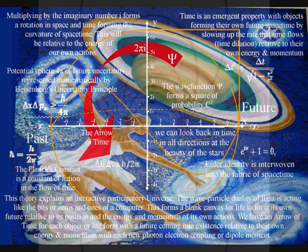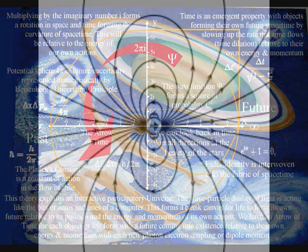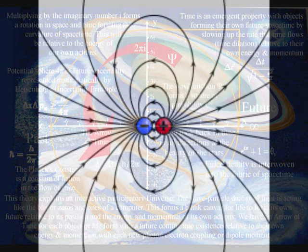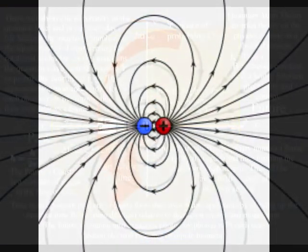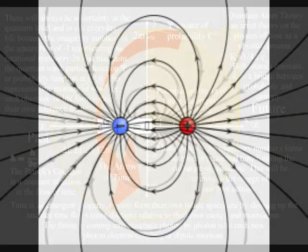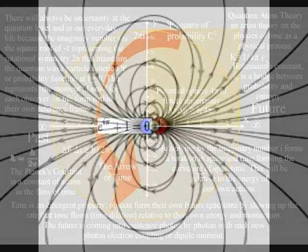Light photon by light photon with each new photon electron coupling or dipole moment. This is because the photon of quantum mechanics is the courier for the flow of electromagnetic fields with the movement of charge and electrical potential.